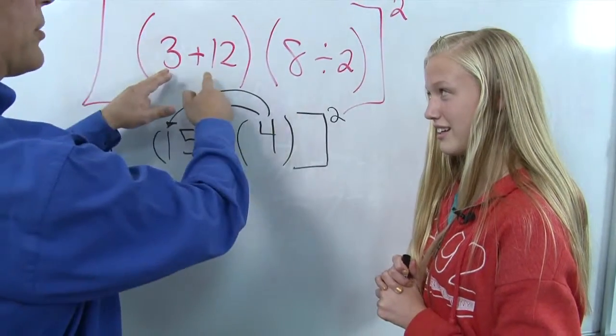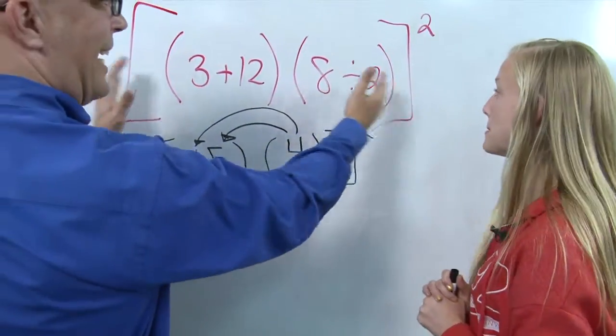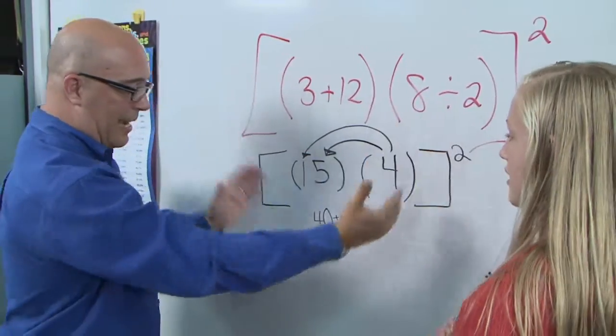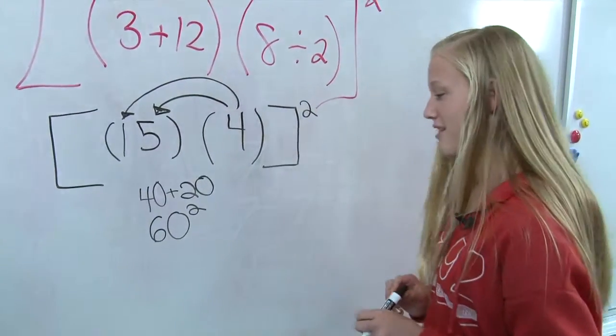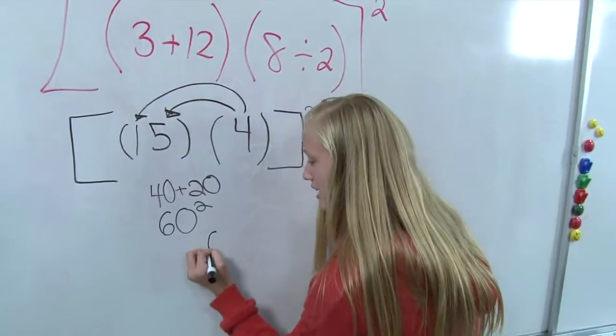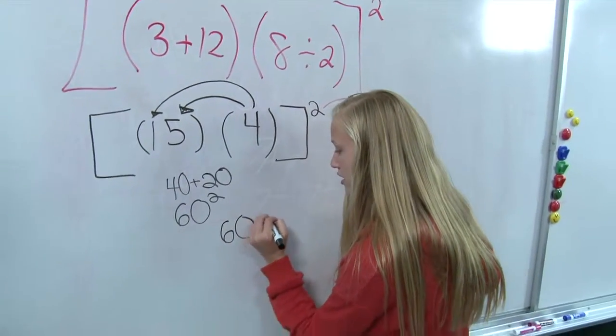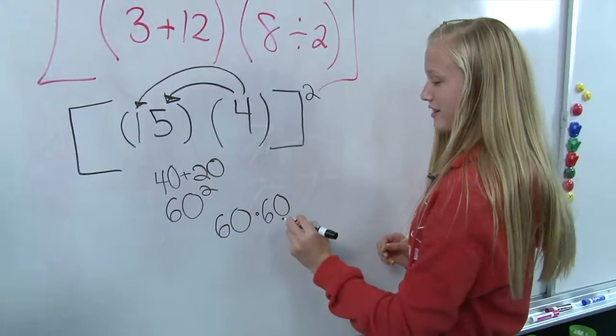Because this actually is everything that is left inside those brackets. Yeah. So when we started with the 3 plus 12 times the 8 divided by 2, everything in there now simplifies to 60. Yeah. So we have 60 squared, and what is that? That would be 60 times 60.